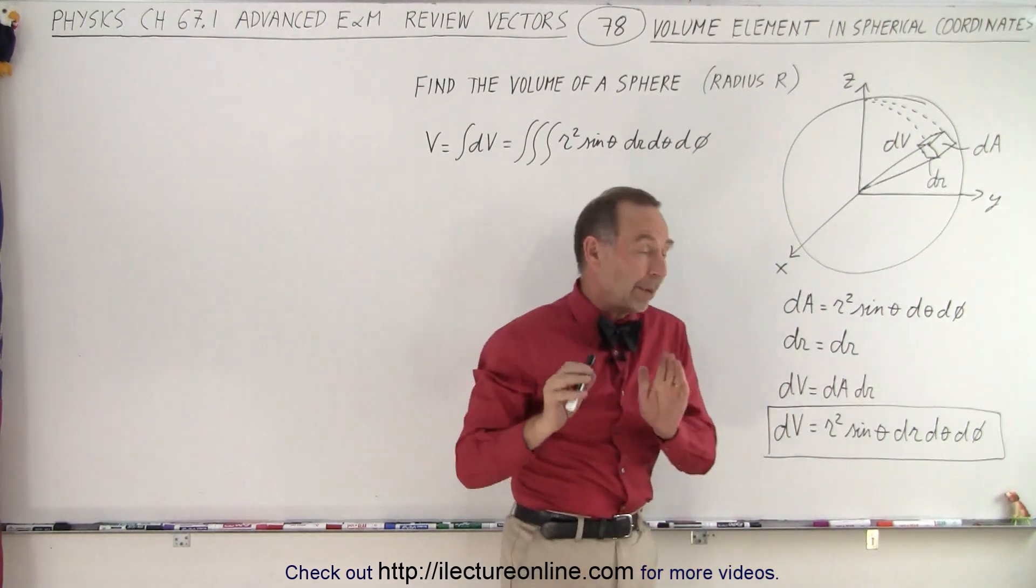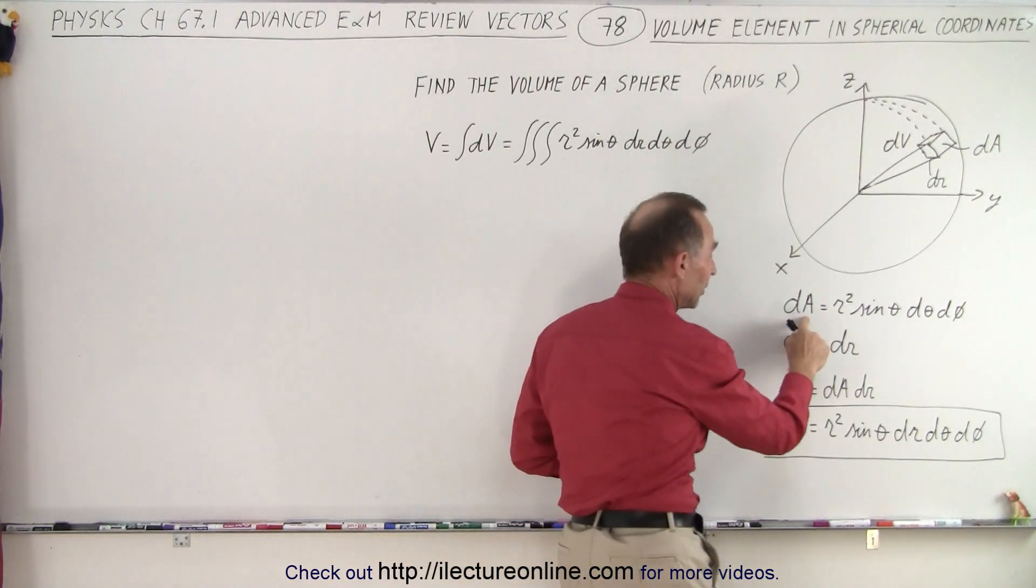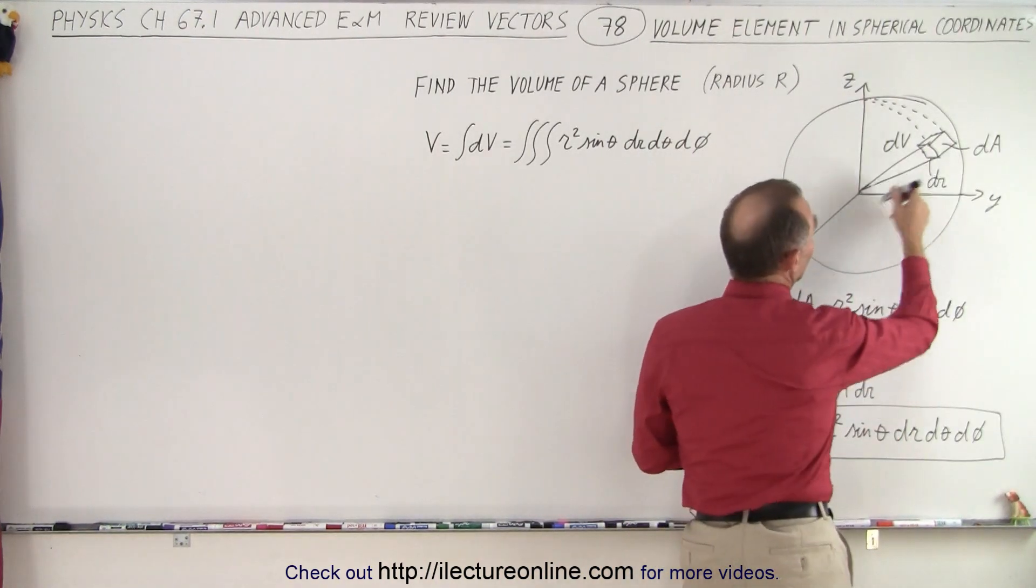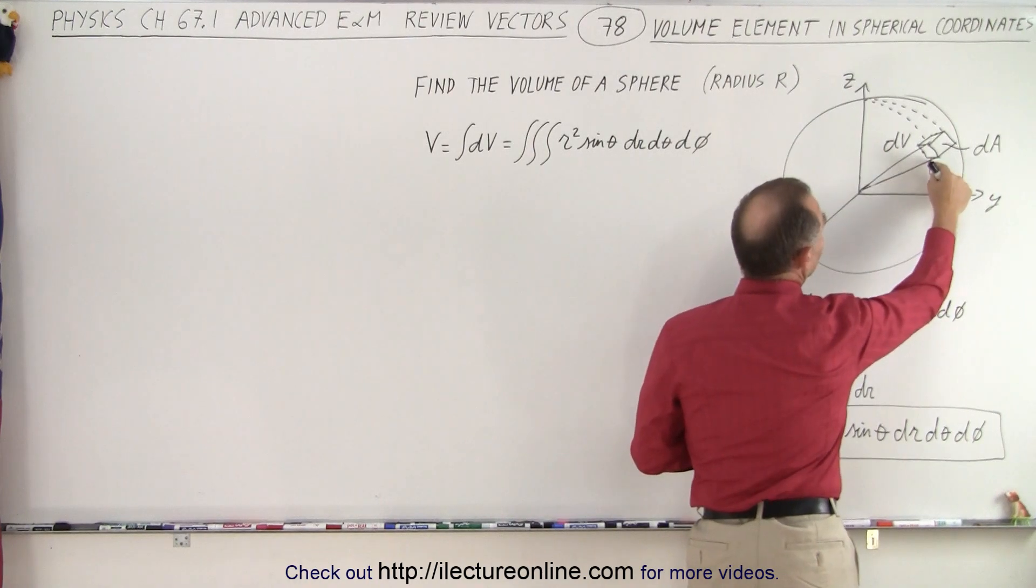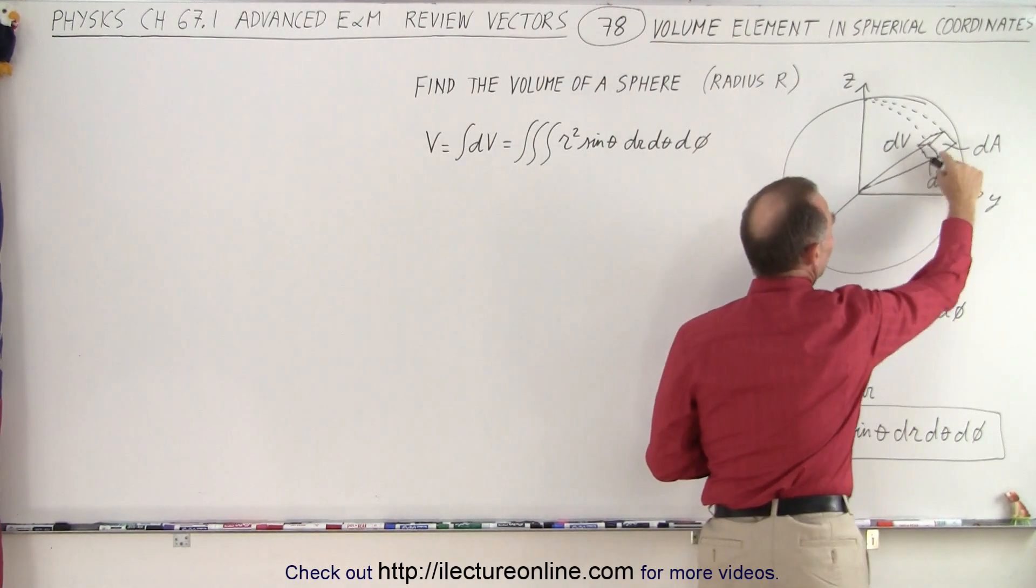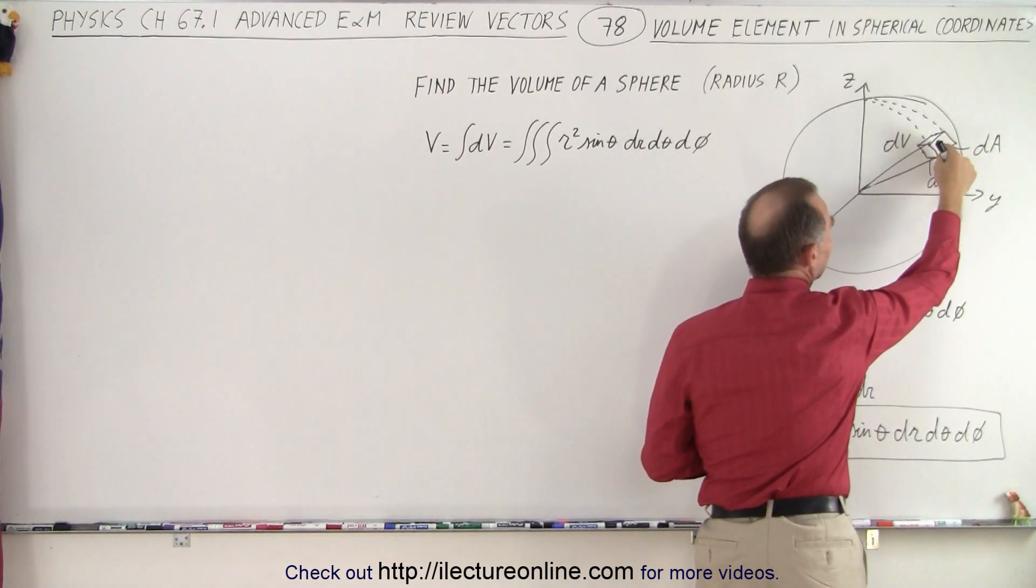So as you remember probably from before, the area element is equal to r squared sine of theta d theta dφ. Essentially what we have here is we have r d theta that gives us this distance right here. We have r dφ which gives us this distance. So when we multiply these two we get r squared d theta dφ.